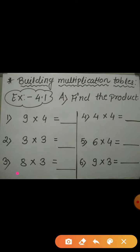In the third example, we have to find out the product of 8 and 3. It means we have to say the table of 8 till 3 times, right? So, 8 ones are 8, 8 twos are 16, 8 threes are 24. So, 24 is the product.